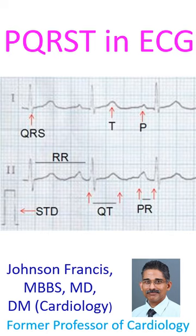P wave is due to atrial depolarization, QRS represents ventricular depolarization, and T wave represents ventricular repolarization.